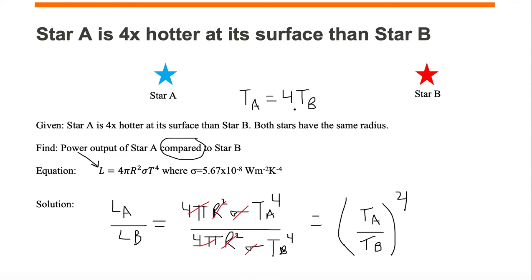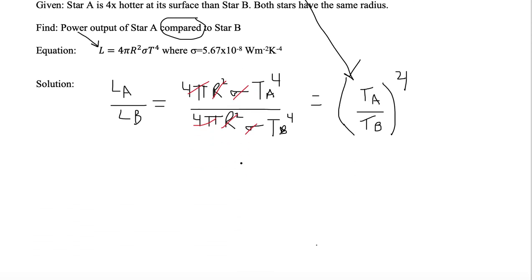We just substitute 4TB in for TA. So this is going to equal 4TB divided by TB. The whole thing is raised to the fourth power.